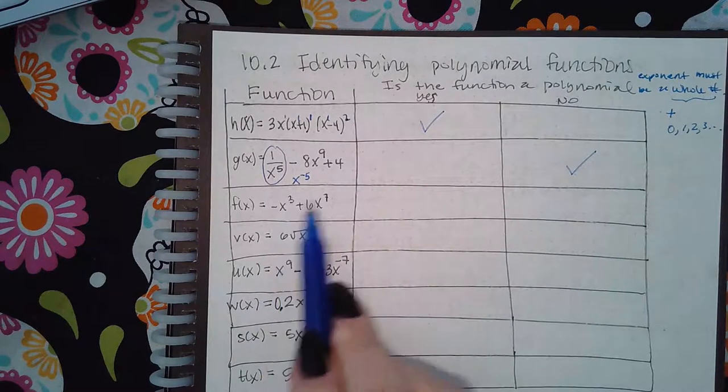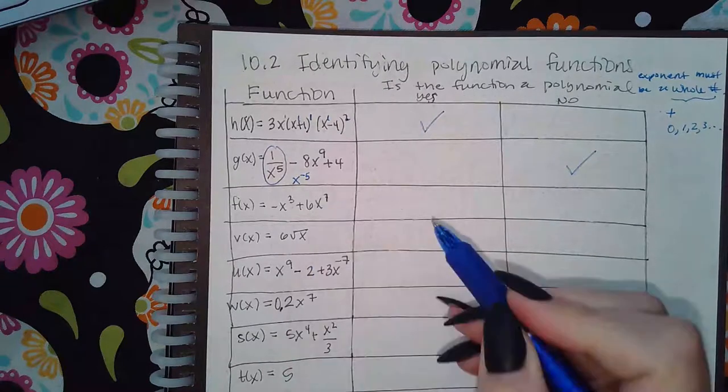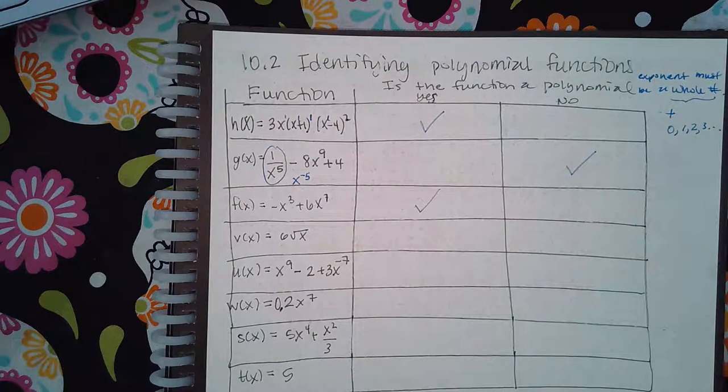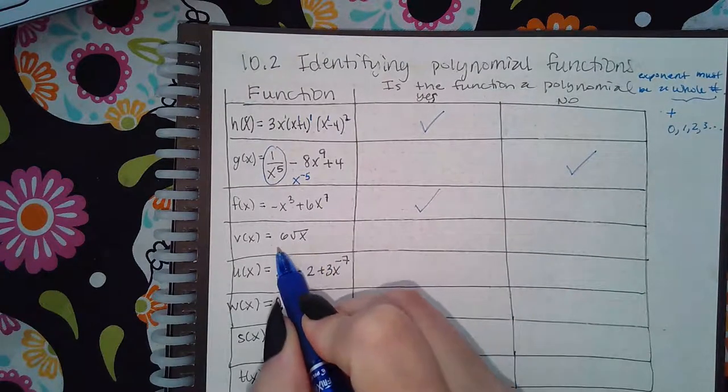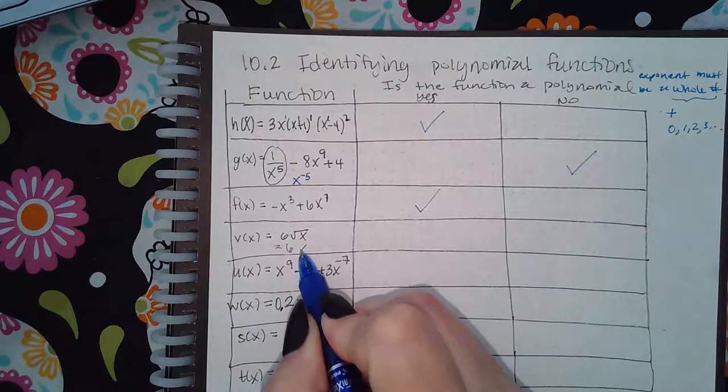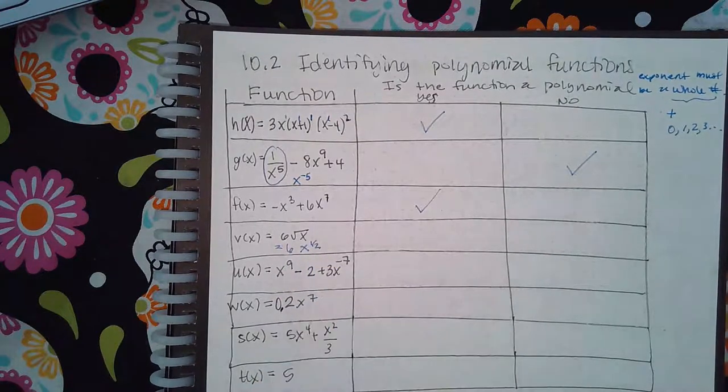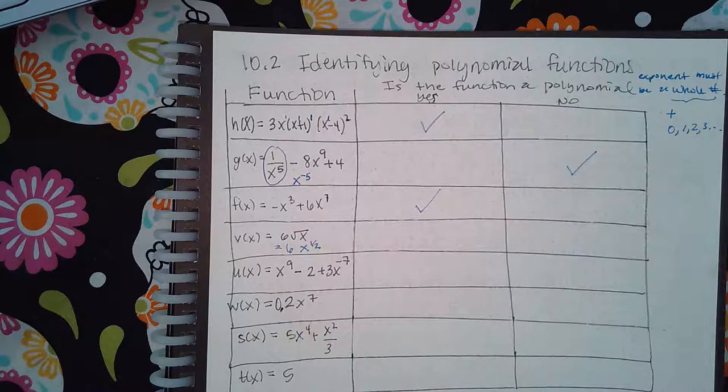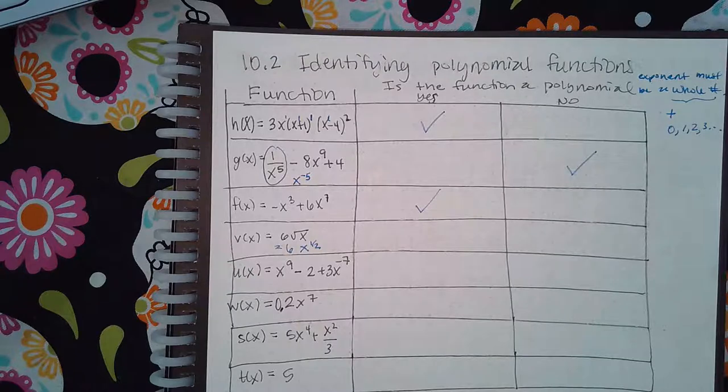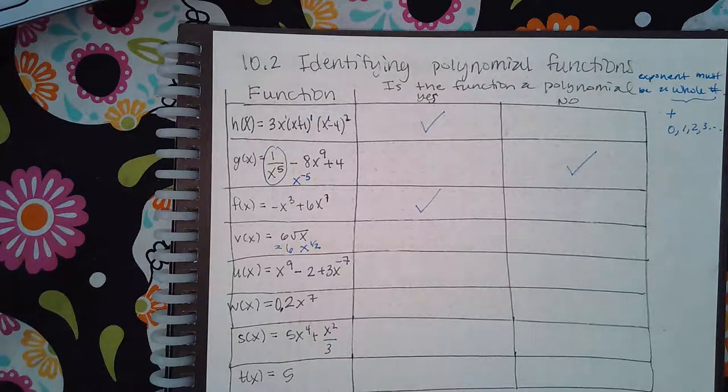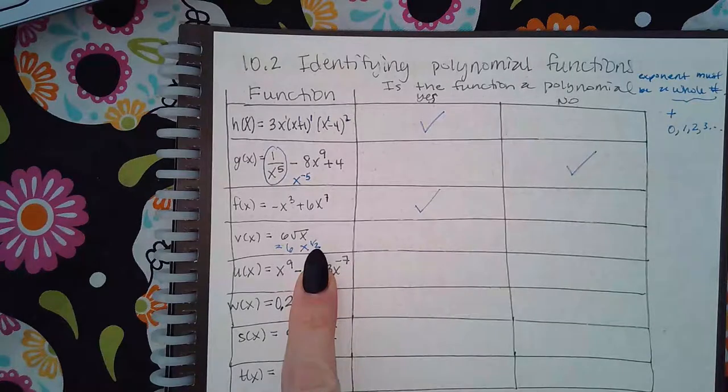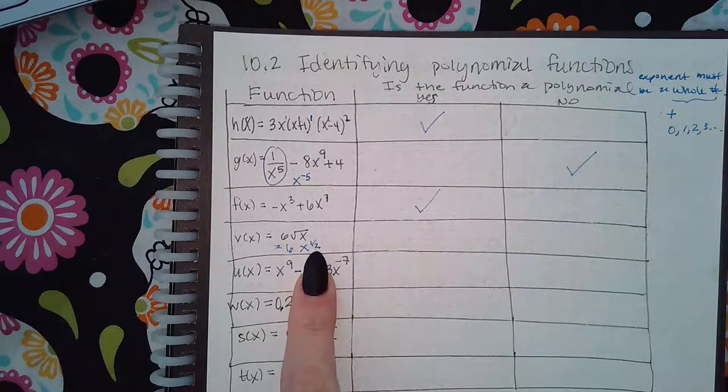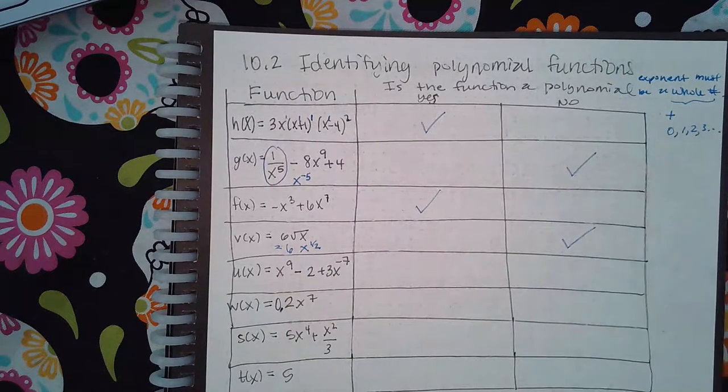Here I have three and a seven exponent, which are whole numbers. So that's good. This can be written as six x to the one half, right? So fractions do have to be written in their exponent forms. And square roots or any kind of radicals also need to be written in their exponent form. And now I have a half exponent. A half is not a whole number. So this would be no, not a function.